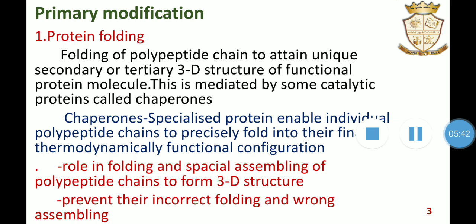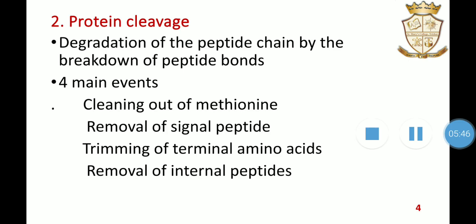The next primary modification is proteolytic cleavage, also known as proteolysis. It is the degradation of a polypeptide chain by the breakdown of peptide bonds. In post-translational modifications of protein, proteolytic cleavage includes four main events: cleaving out of methionine, removal of signal peptides, trimming of terminal amino acids, and removal of internal peptides. This is mainly associated with the activation of inactive precursor proteins.